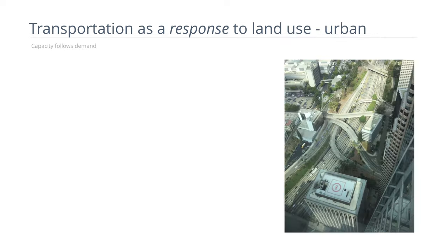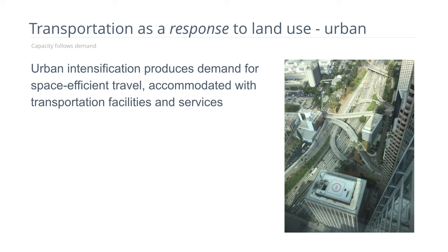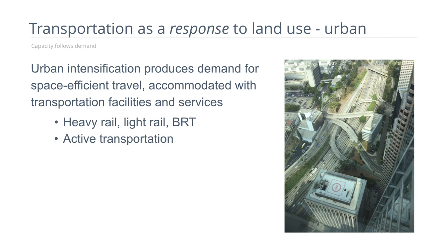The second version is transportation as a response to land use in an urban context. This is when urban intensification produces demand for space-efficient travel — situations in which the private auto simply cannot be accommodated in the space — and therefore leads to the development of heavy rail, light rail, bus rapid transit, and active transportation modes.